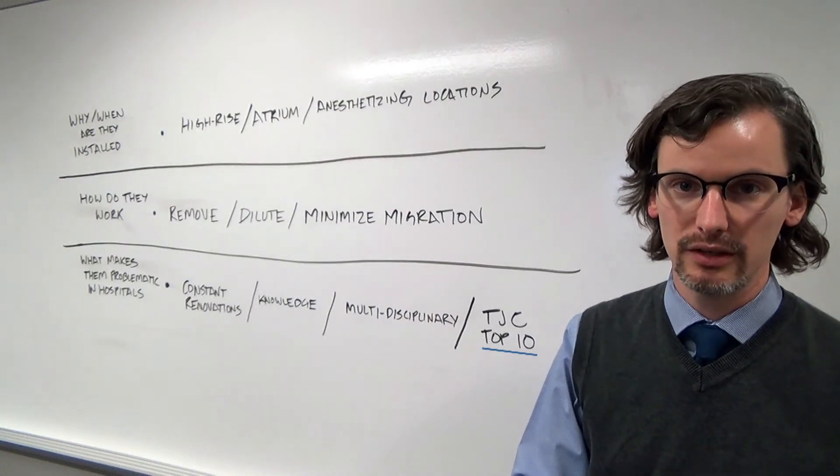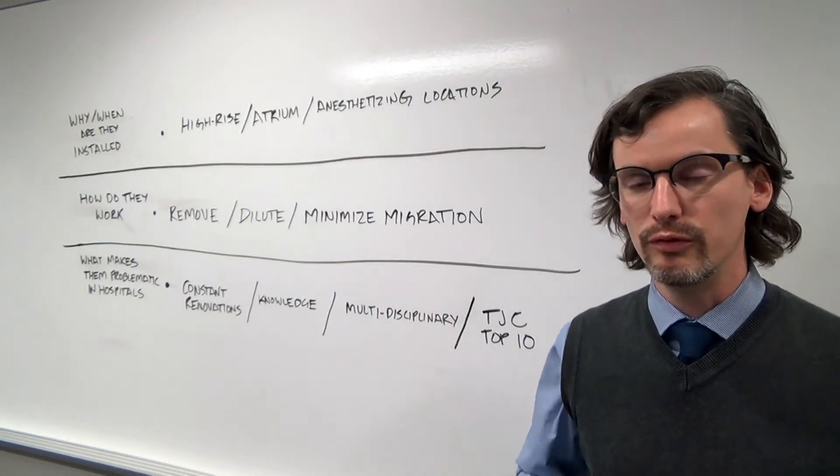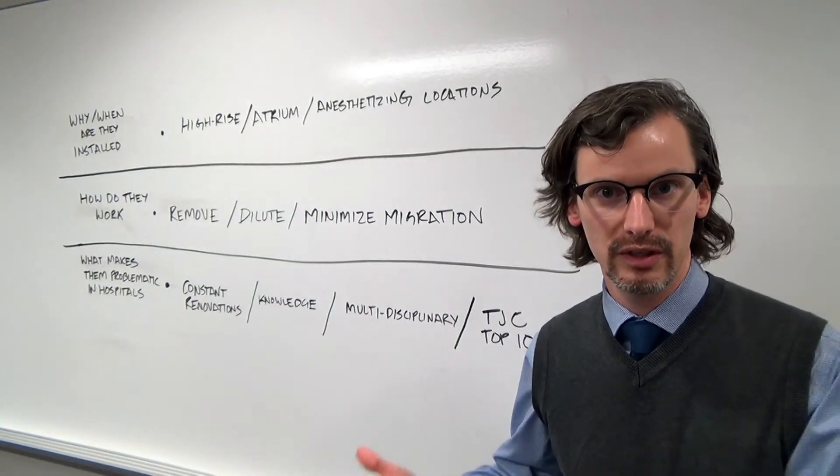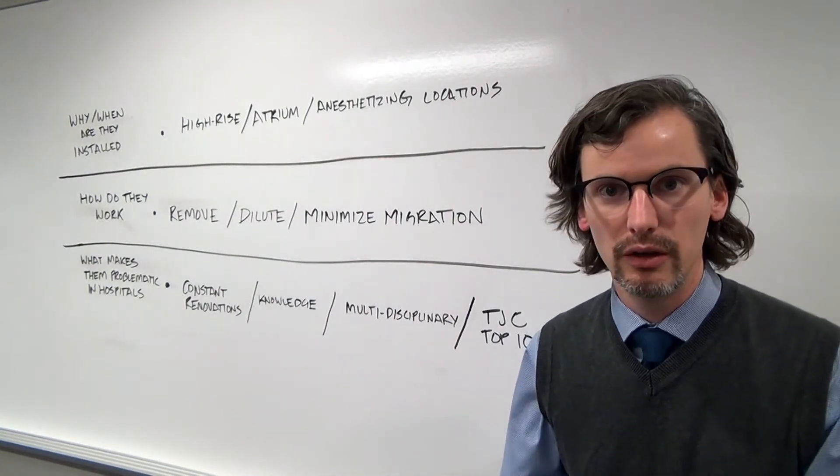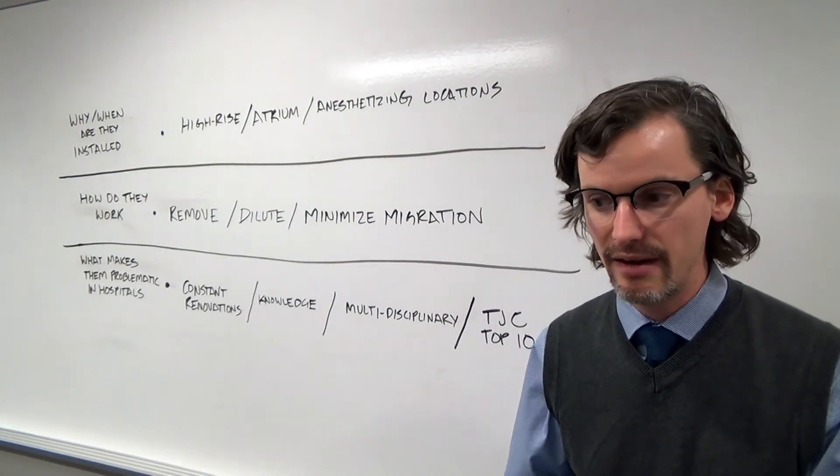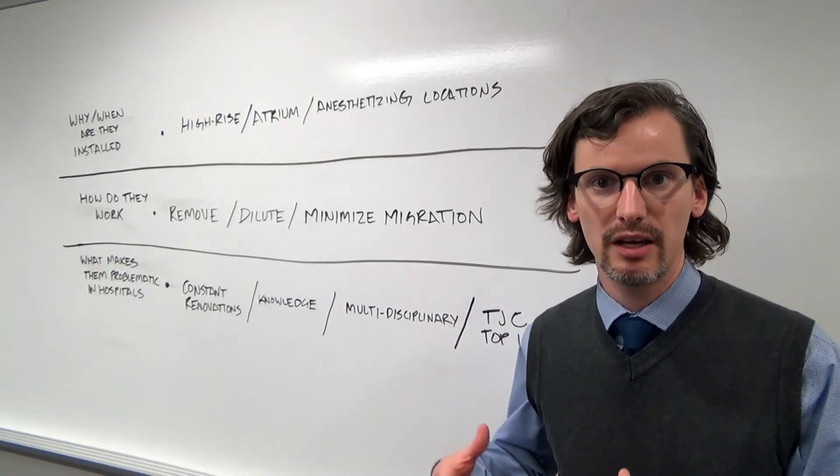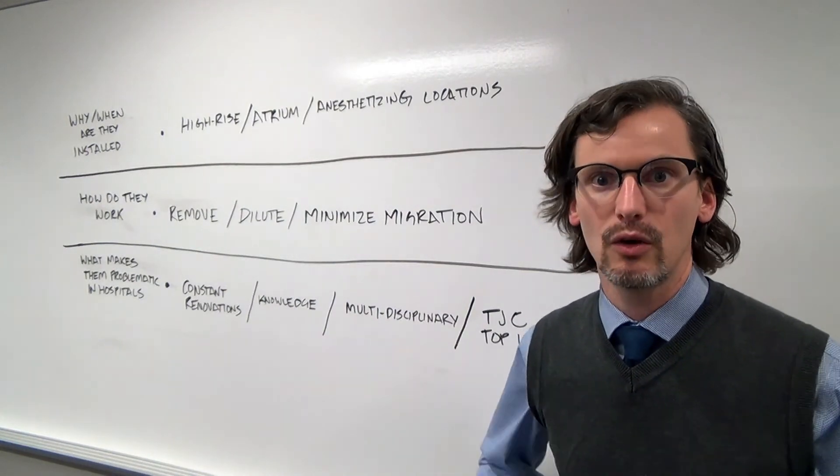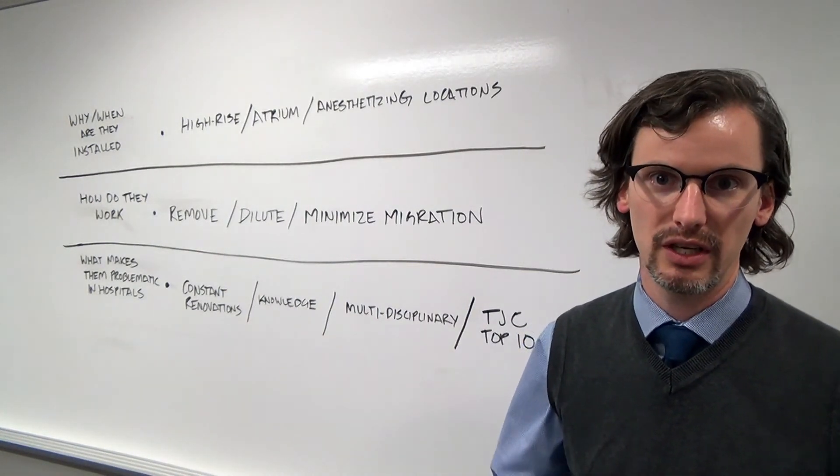They're on the TJC top 10 list, so when inspectors come in and review the facility, they're expecting to see a detailed list of your facility's smoke control systems, a good understanding of how those systems work from your technicians and contractors and staff, and clear and effective documentation that proves that your systems are being tested in accordance with the standards in place under TJC.